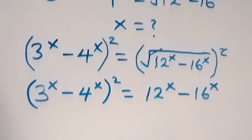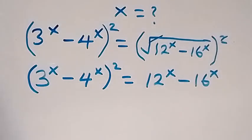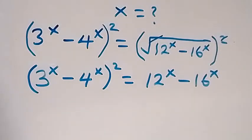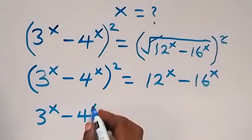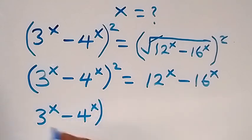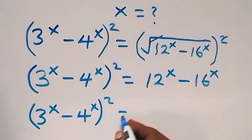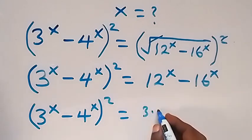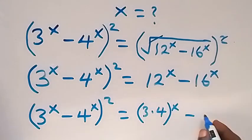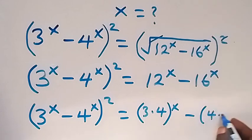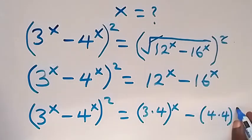From here we can also express 12 and 16 in the form of 3 and 4. So 3 raised to power x minus 4 raised to power x, all squared, can be written as 3 times 4, all raised to power x, then minus 4 times 4, all raised to power x.